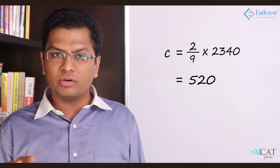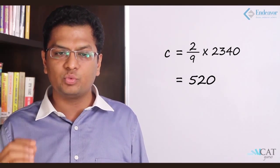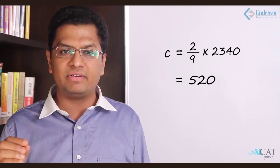So that's their relative efficiencies: 4 is to 3 is to 2. So C will get how much? 2 out of the total which is 9. So 2 out of 9. C will get which is nothing but 520 rupees.